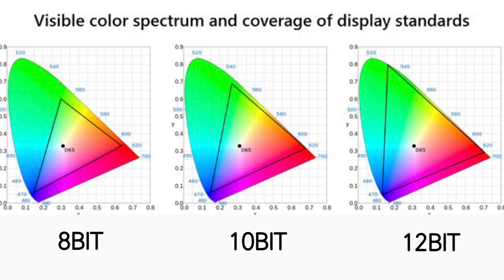Let's take a look at this picture. Going from left to right, the triangle represents 8, 10, and 12-bit. The more bits, the bigger the triangle gets. At 8-bit it's a pretty small triangle versus 12-bit. So does 12-bit give more colors than 10-bit? The answer is no — you're going to get more shades of colors. All three pictures have the same colors; the triangle shows how many shades of color it can get from that color gamut. So 12-bit gets more shades, giving you a smoother transition between colors.